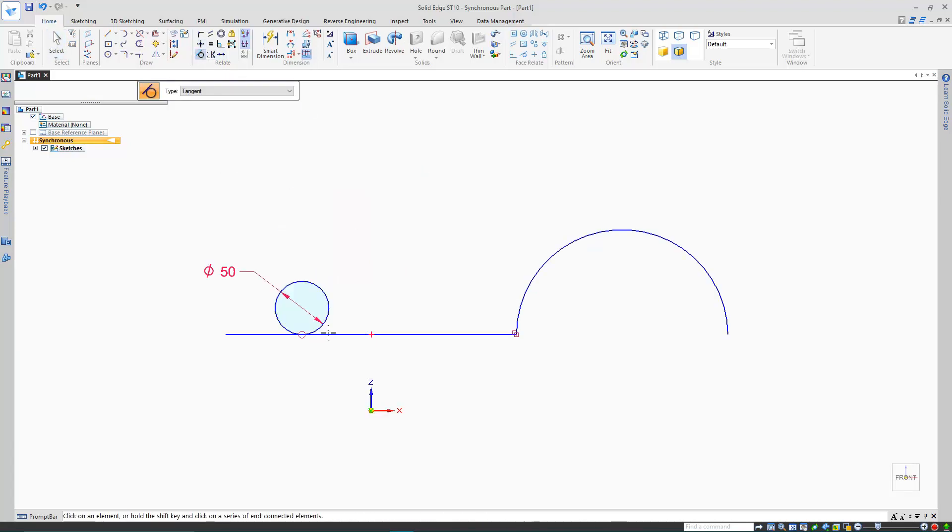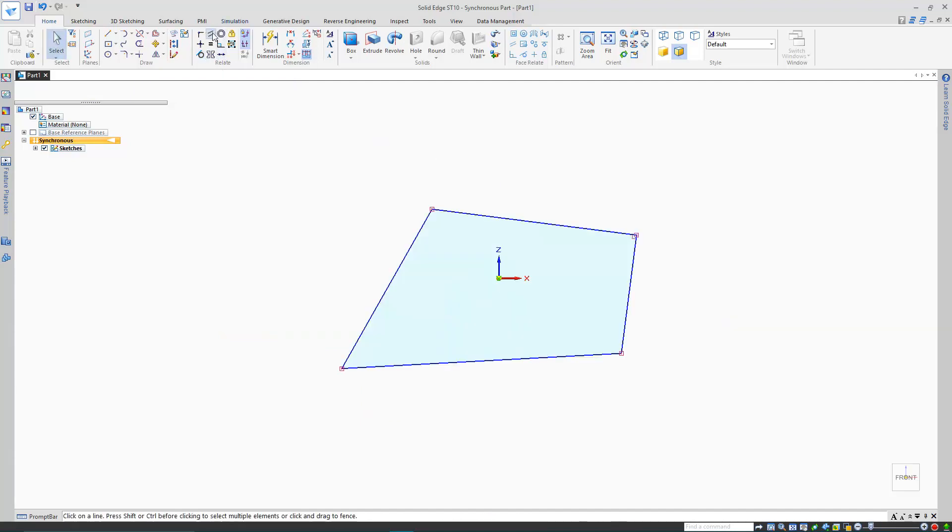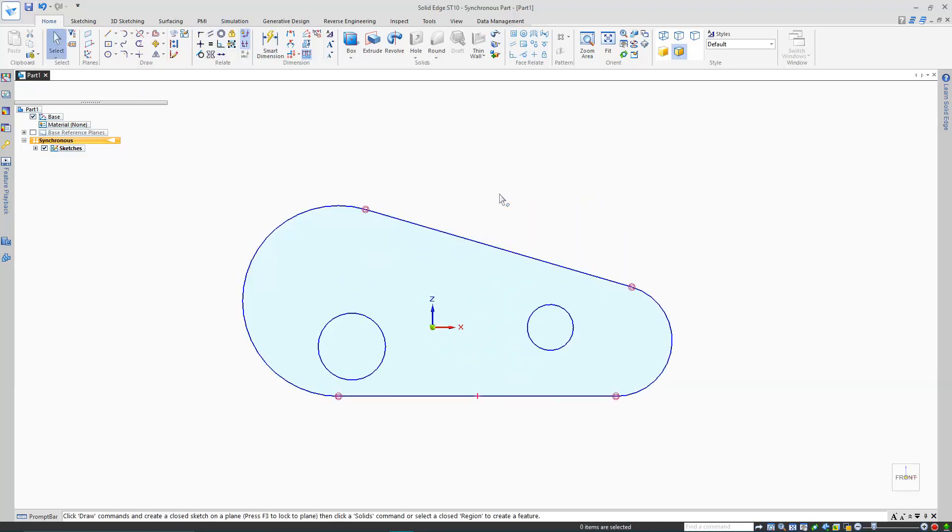Tangent, which can move a curved line to connect exactly onto a straight or curved line in a tangential manner. Parallel, which will make two straight lines parallel to each other. Equal, which makes two elements equal length, radius or diameter.